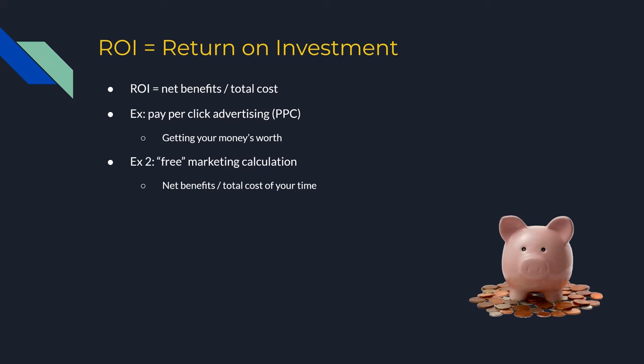ROI is basically how much you're getting out of something compared to what it's costing you, whether that cost is money you're spending or your personal time if you're doing it yourself. To calculate ROI, you take the net benefits — anything after your other costs have been paid — and divide that by your total costs: how much benefit are you getting compared to how much it's costing you?